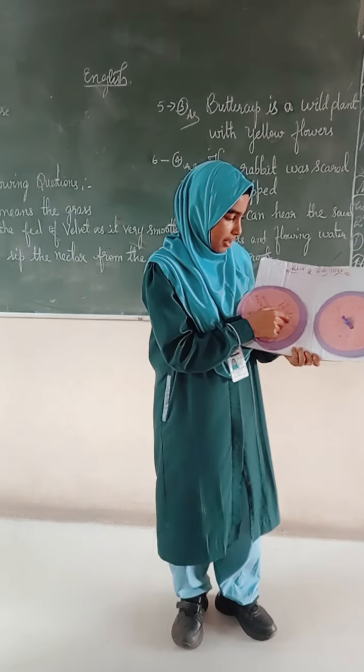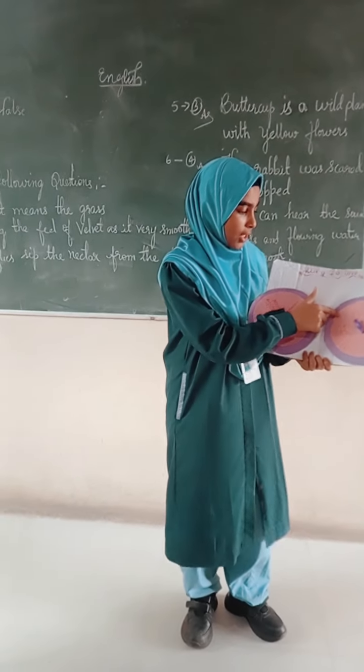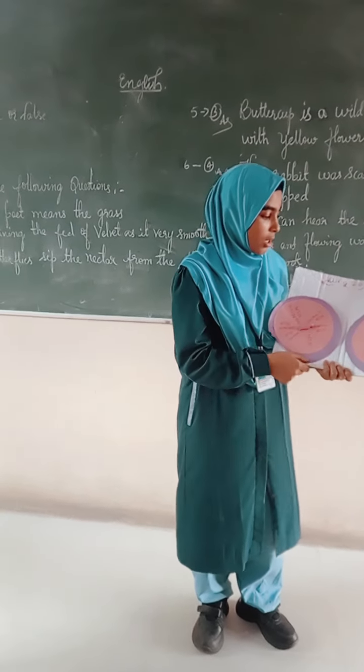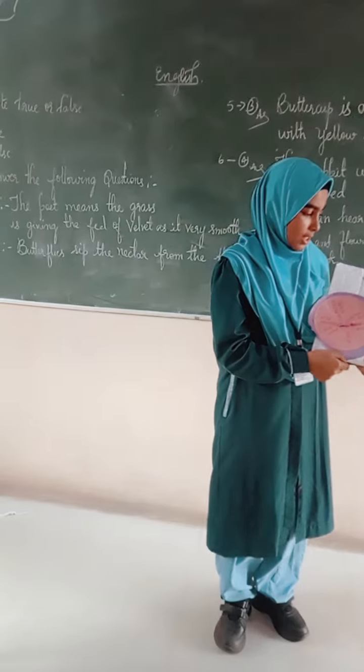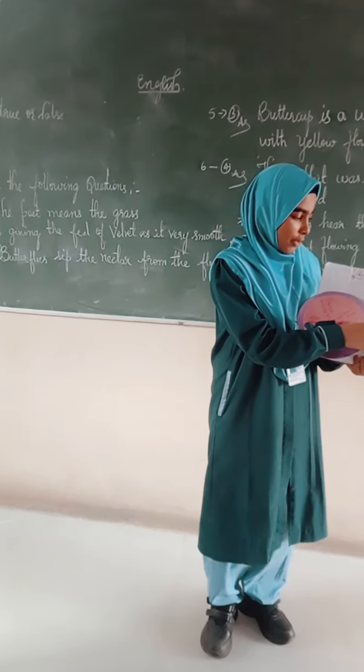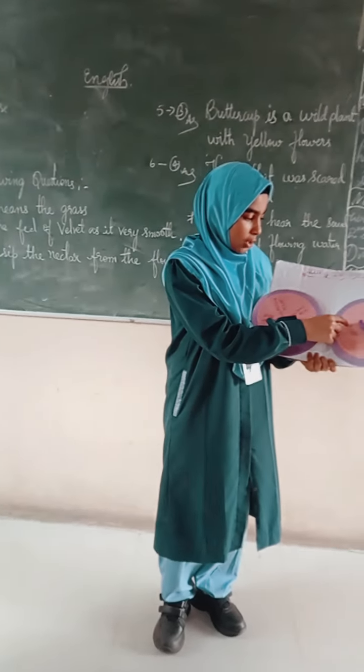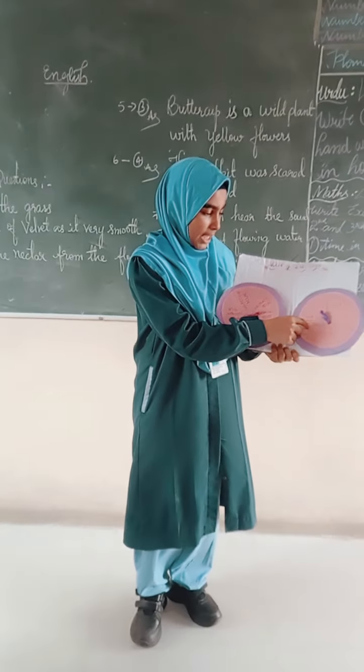What is meant by material noun? Material noun is a material or substance of an object. Examples: gold, plastic.